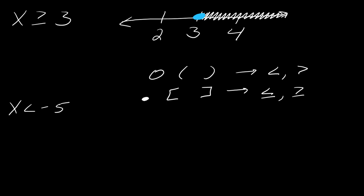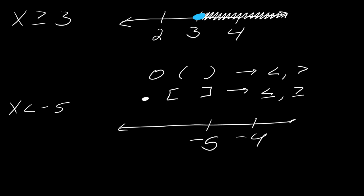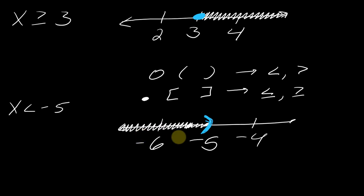Now let's contrast this with x is less than negative 5. I center on negative 5 — negative four is to the right and negative six is to the left. Numbers less than negative 5 go to the left. Since it's a less than symbol, I don't want to include the 5, so I'll use an open bracket, with the bracket opening in the direction you've colored the line.